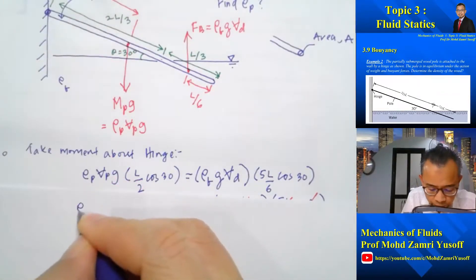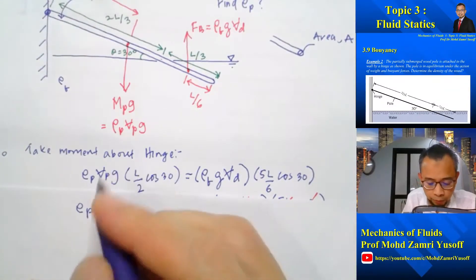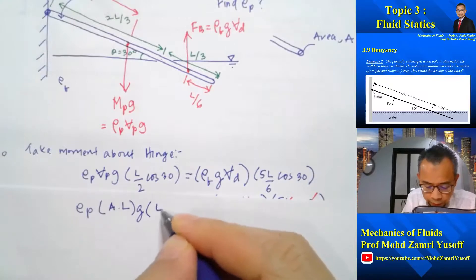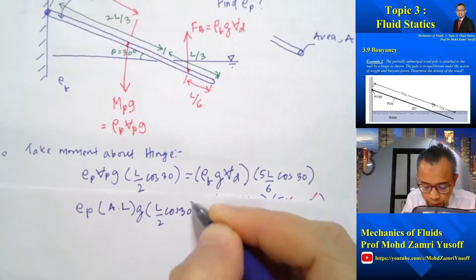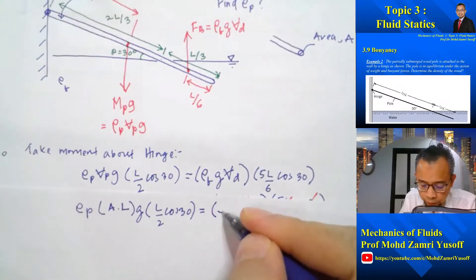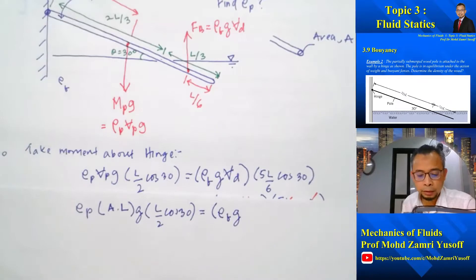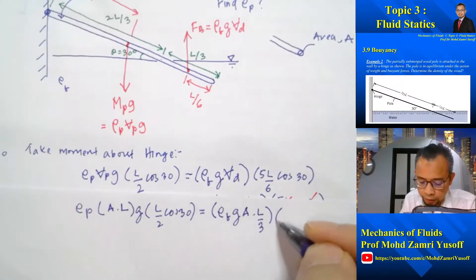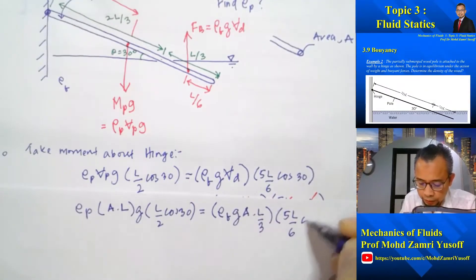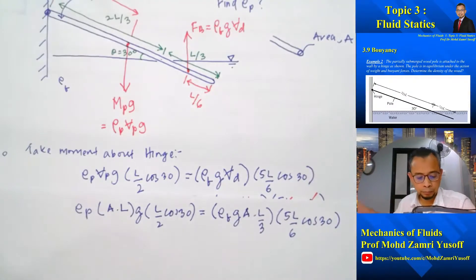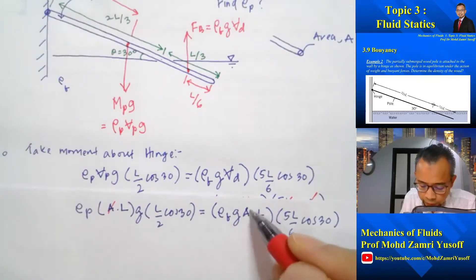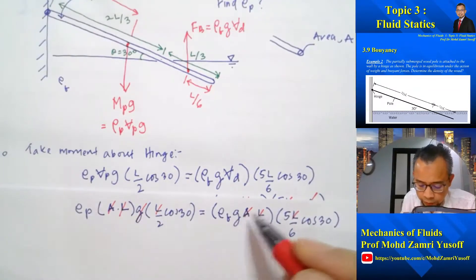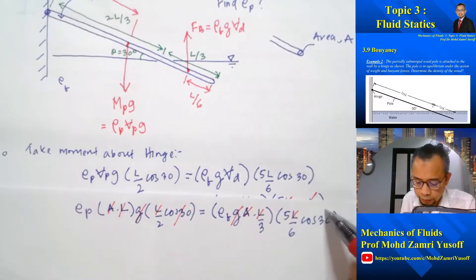So we have: ρ_pole × A×L × g × (L/2) × cos30 = ρ_fluid × g × A×(L/3) × (5L/6) × cos30. In this equation, A, L, g, and cos30 all cancel out.